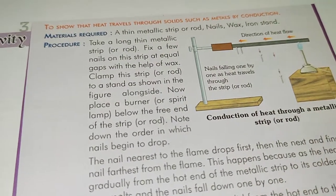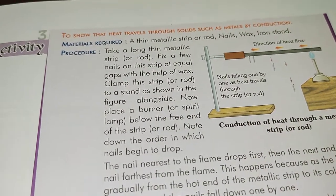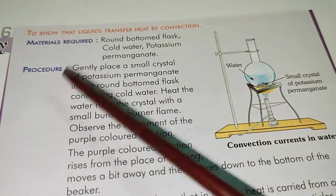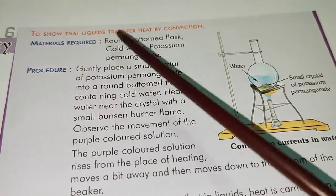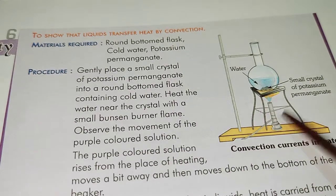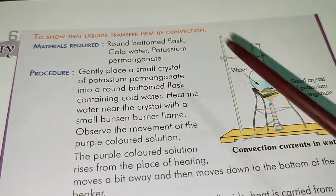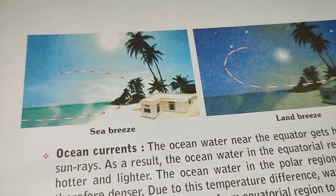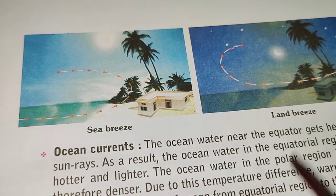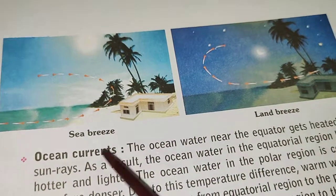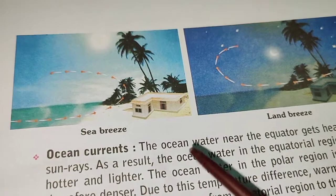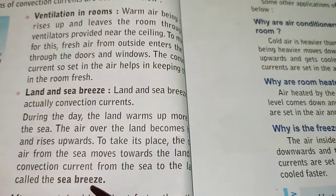Chapter 4, Number 3: show that liquids transfer heat by convection — draw, color, label and describe the procedure. Number 4: draw and color the land and sea breeze diagram. You can describe in short beside the drawing.